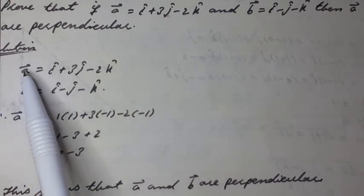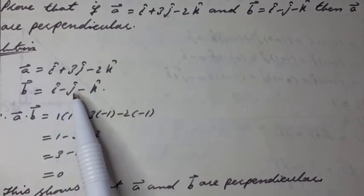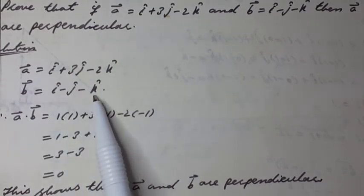Solution: Here a vector is equal to i unit vector plus 3j unit vector minus 2k unit vector. b vector is equal to i unit vector minus j unit vector minus k unit vector.